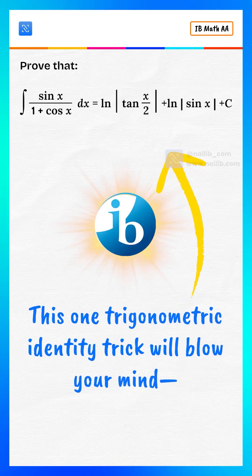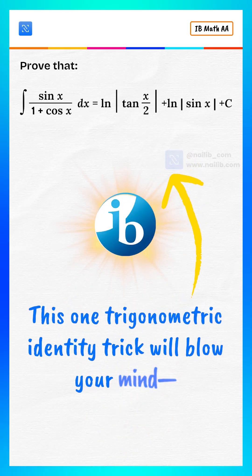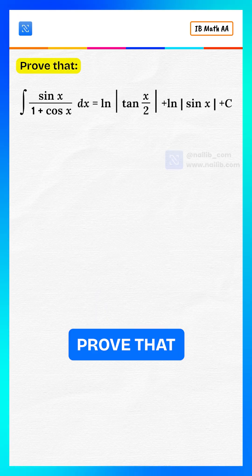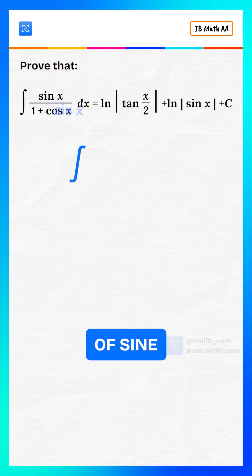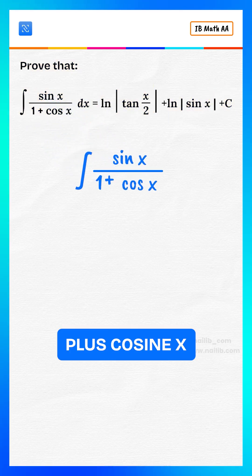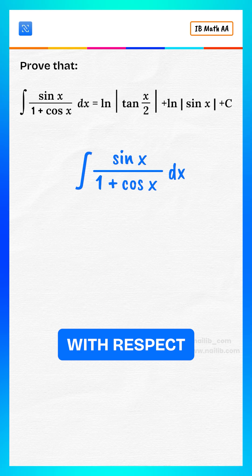This one trigonometric identity trick will blow your mind. Watch this. Prove that the integral of this equals this, the integral of sine x divided by 1 plus cosine x with respect to x.